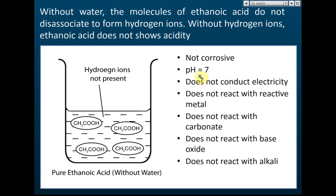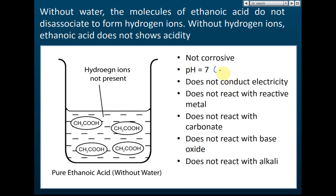The pH of pure ethanoic acid is 7, meaning it is neutral — I'll explain pH in more detail later. It does not conduct electricity, even though acids normally can. It does not react with reactive metals, does not react with carbonates, does not react with base oxides, and does not react with alkalis. All of these are normally properties of acid, but pure ethanoic acid shows negative results for all of them.